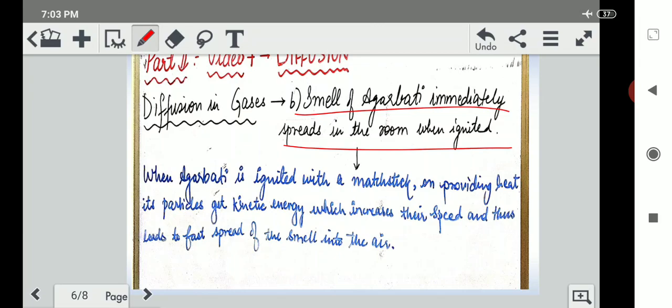This is also the same. Smell of agarbatti immediately spreads in the room when ignited. The concept is same. Agarbatti is also matter because it has some mass and it is occupying some space. Agar wo matter hai, to agarbatti ke andar bhi particles honge. What will those particles do? They will constantly move. Ab hamne agarbatti jala di. When we have lighted it, we have raised its temperature. Jab temperature raise hota to agarbatti ke particles idhar udhar fata fata move karne lagayenge. This increases their speed and thus leads to fast spread of smell into the air.